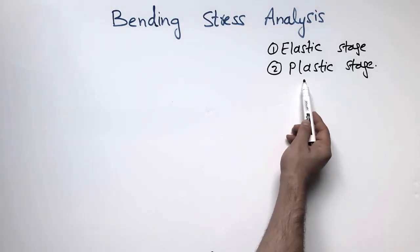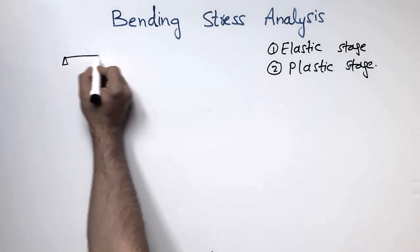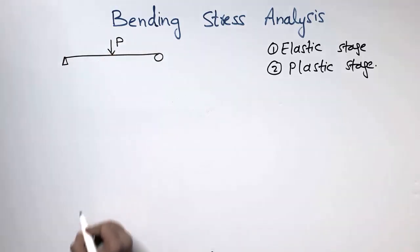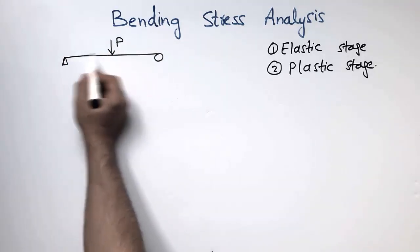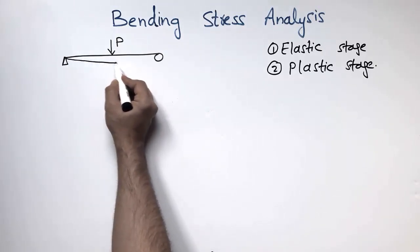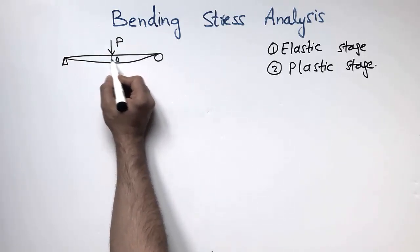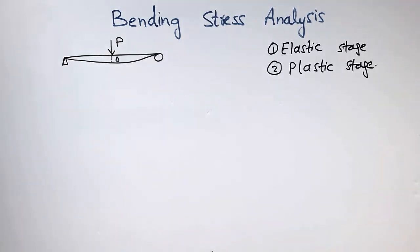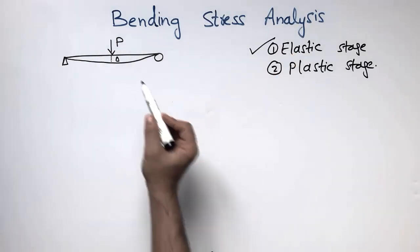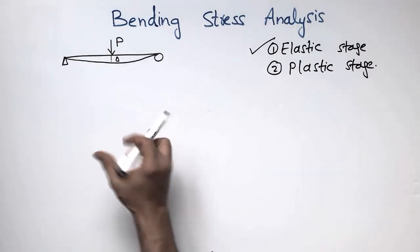Let's consider this simply supported beam with load P acting at the center of the beam. Due to this load, the beam will try to deflect, and it will show maximum deflection at the middle of the beam. First, by considering the elastic stage, we assume that this load is small enough that the stresses in the beam remain within the elastic limit.